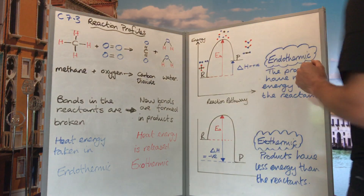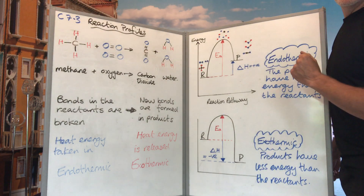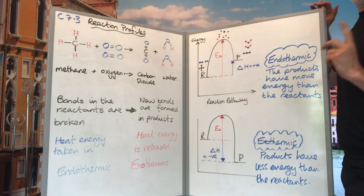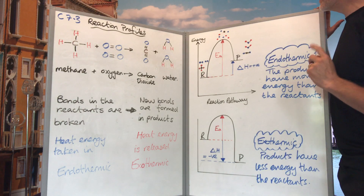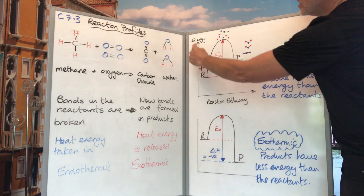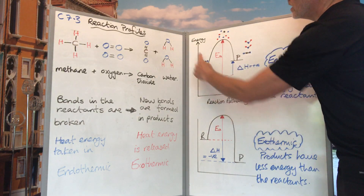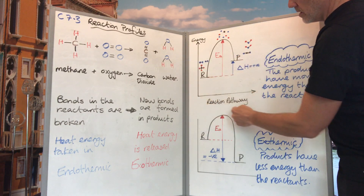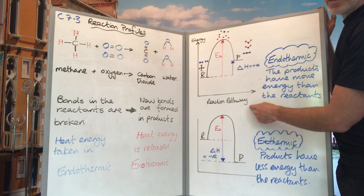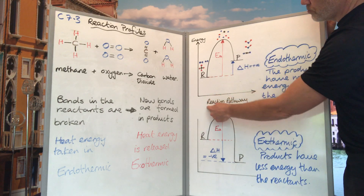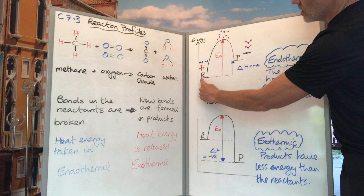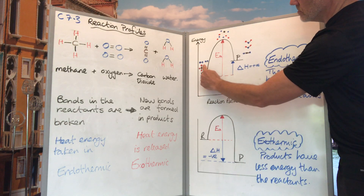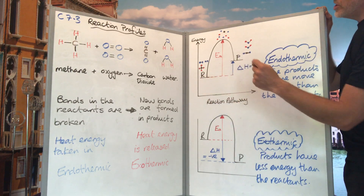Next we look at the reaction profile itself — this is a standard format you need to learn and reproduce in the exam. We have two axes: energy on the vertical axis, increasing as we go up, and along the bottom the reaction pathway or time, which represents the progress of the reaction.